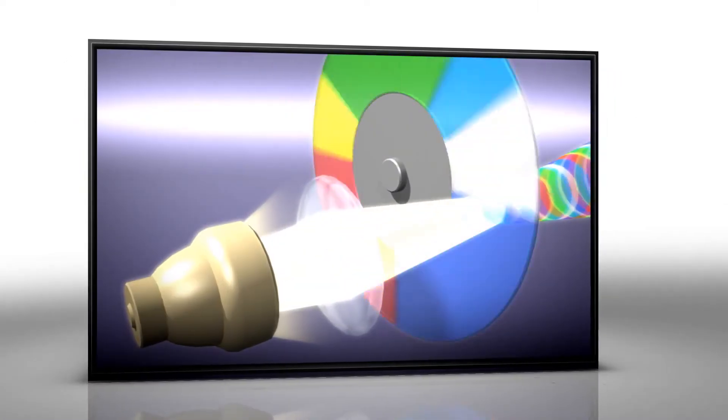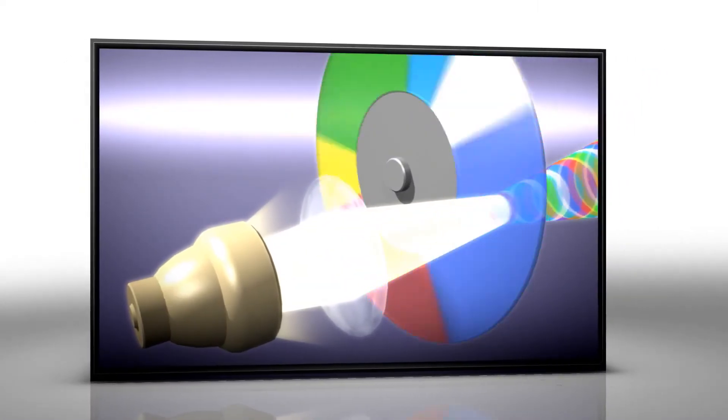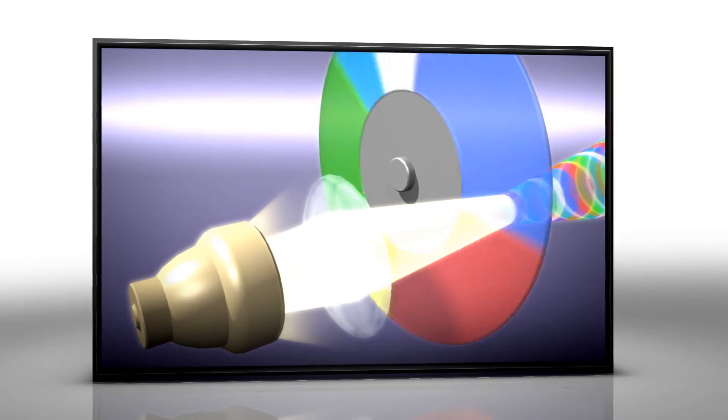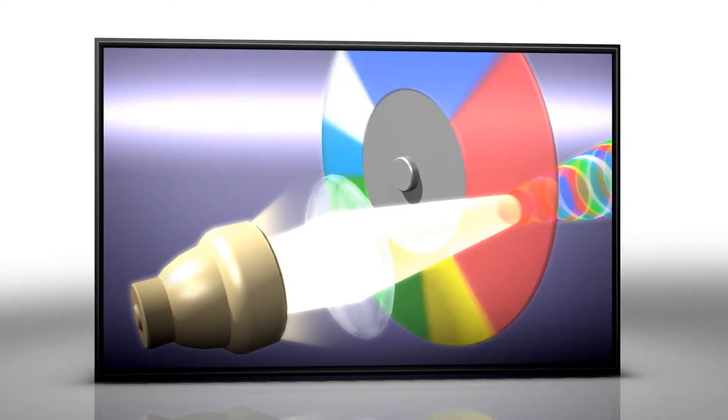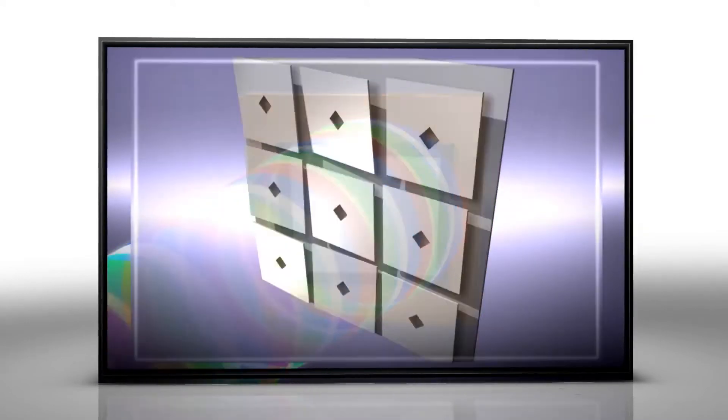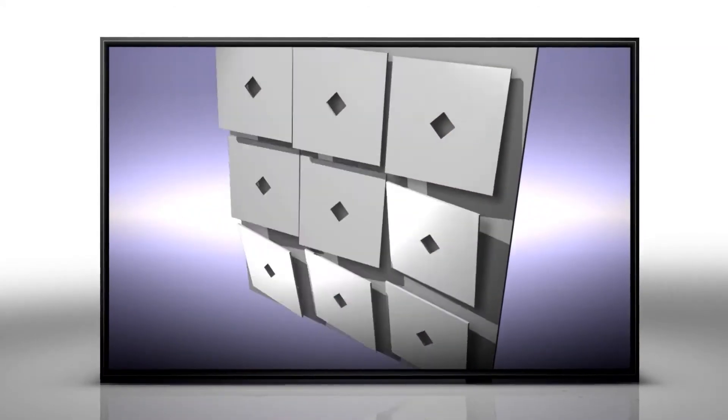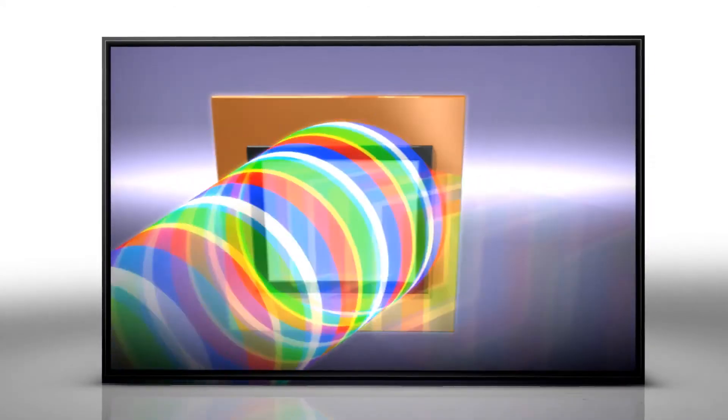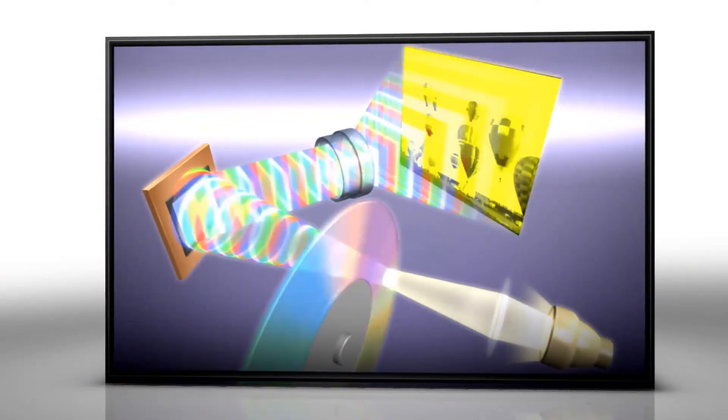The primary competitor to 3LCD is one-chip DLP. Most one-chip systems rely on a color filter wheel. This mechanical device spins very fast and breaks lamp light into short bursts of color. Once through the color wheel, light reflects off a DLP chip where tiny mirrors flash to form the image.